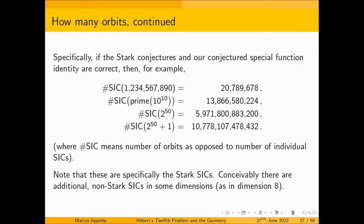This is all based on conjecture — the Stark conjectures and a conjectural special function identity we've not been able to prove. But I think both conjectures are probably true and these numbers are correct. I should stress these are specifically what I'll call Stark SICs: not just Weyl-Heisenberg SICs, but Weyl-Heisenberg SICs that owe their existence to the Stark conjectures. Maybe there are other non-Stark SICs in other dimensions, as happens in dimension eight — but for this family, those numbers are pretty reliable.